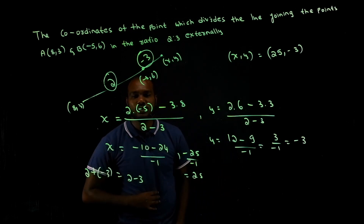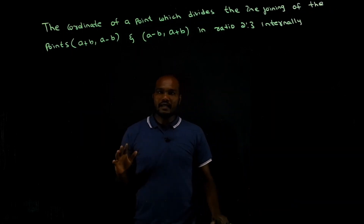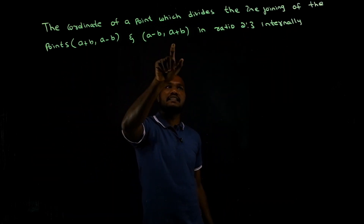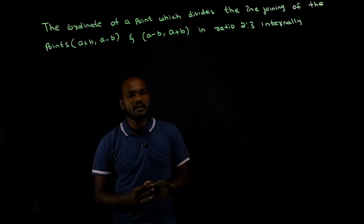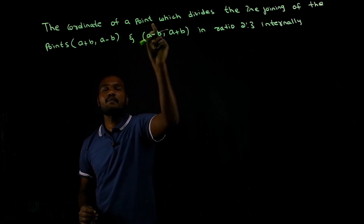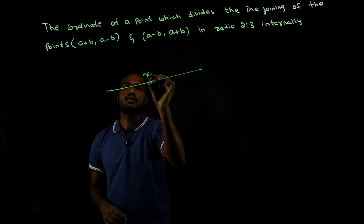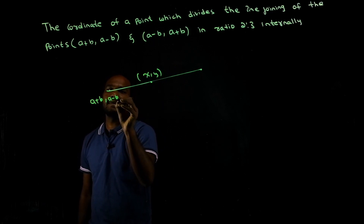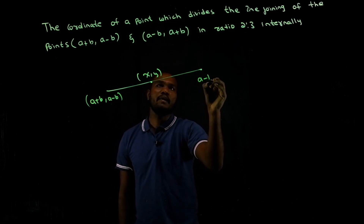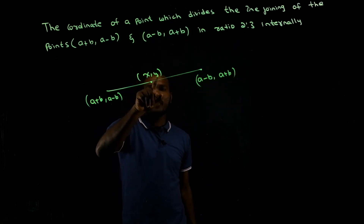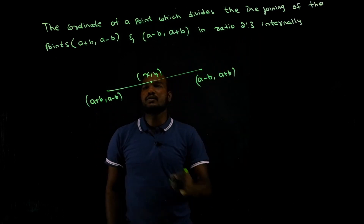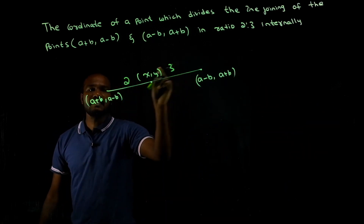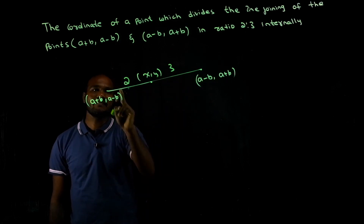Let's do another exam question. Find the coordinates of the point which divides the line joining the points a plus b comma a minus b and a minus b comma a plus b in the ratio 2 is to 3 internally. Since it's internal, the point is in between. We apply the formula: this into this plus this into this, divided by this plus this.